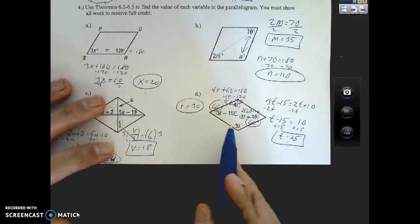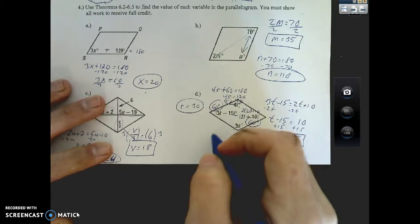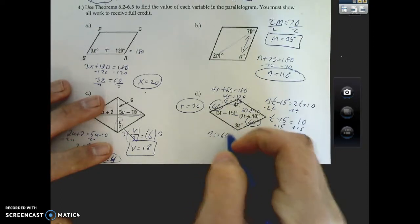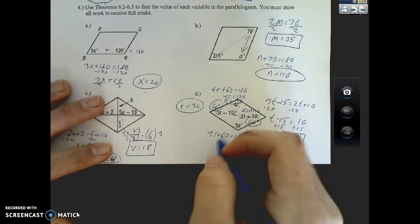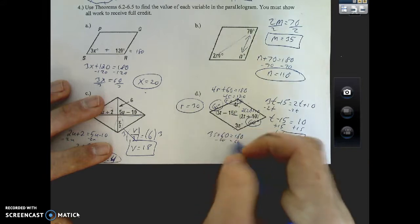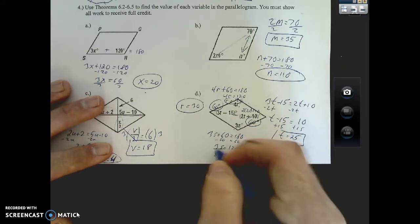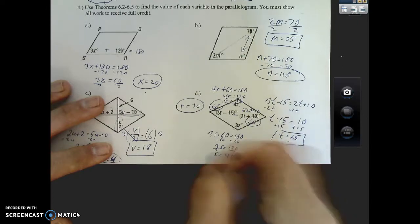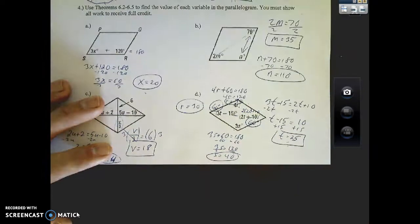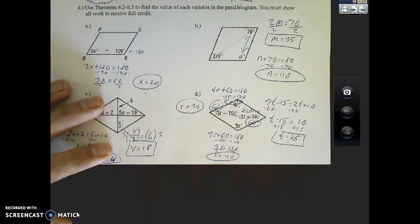Then down here, same idea: 3s plus 60 equals 180, subtract 60, 3s equals 120, divide, s equals 40. We're looking good there, no big deal.